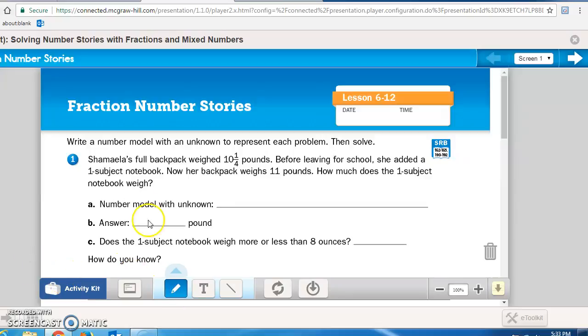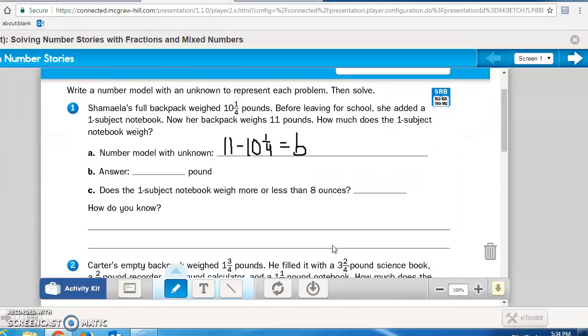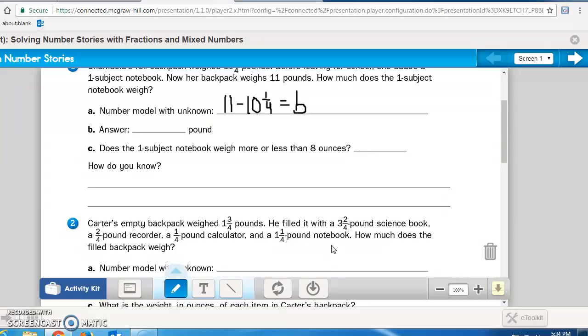Follow along as I read. Shamayla's full backpack weighed 10 and 1/4 pounds before leaving school. She added a one subject notebook. Now her backpack weighs 11 pounds. How much does the one subject notebook weigh? The number model with the unknown. Well, I know now it weighs 11. And originally it weighed 10 and 1/4 or 10 and a quarter. So what does it weigh now? And I'm going to put a B for backpack. So now you need to find out what 11 minus 10 and 1/4 equals. Does the one subject notebook weigh more or less than eight ounces? How do you know? You need to explain that.